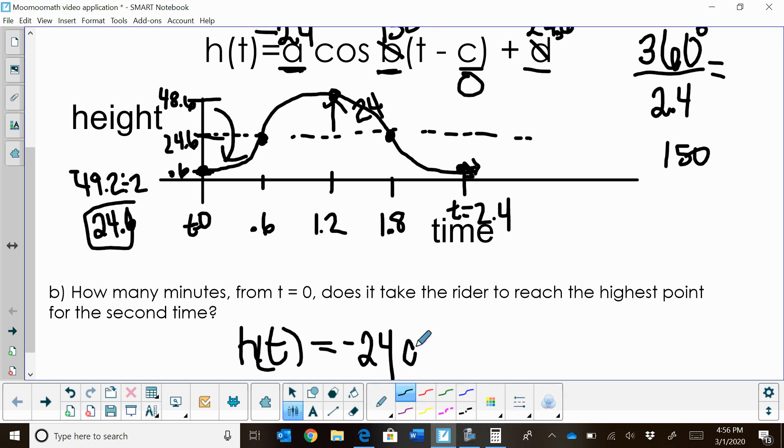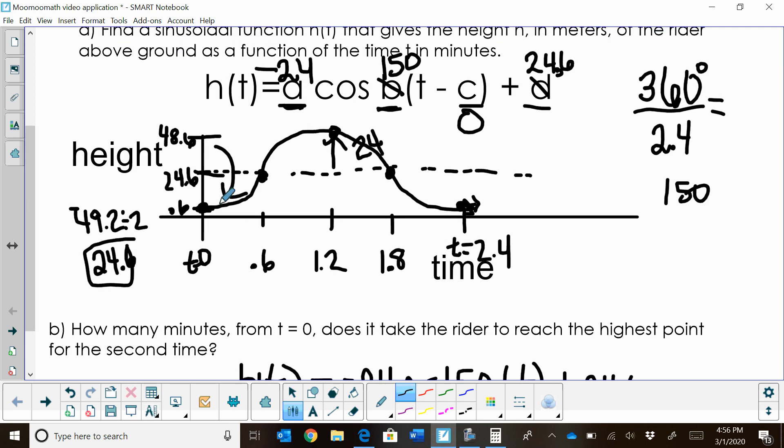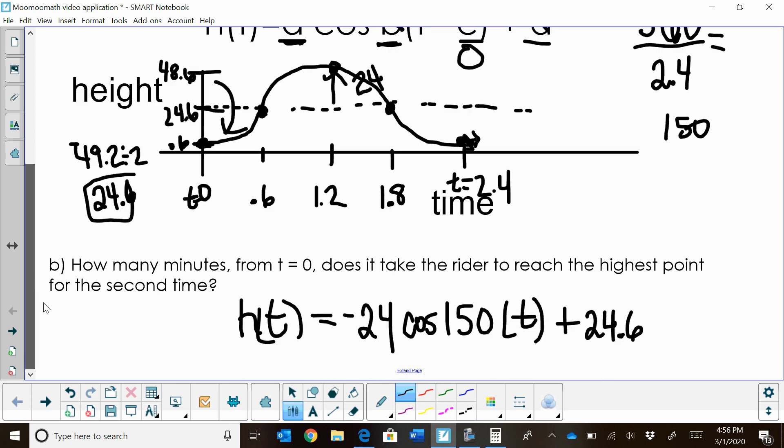Cosine. And then our period was 2.4, so the B value is 150. Then we're going to take the T minus 0, so just T. Plus our midline. And our midline is at 24.6. So there's our equation to represent this Ferris wheel and the height you're going to be at on the Ferris wheel. This is representing your height and how high your car is at each minute on the Ferris wheel.